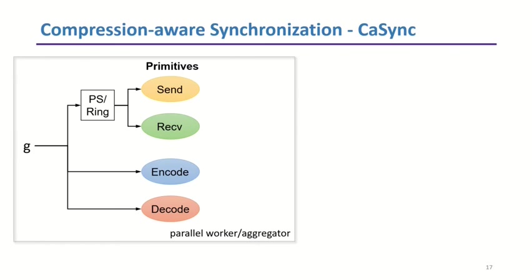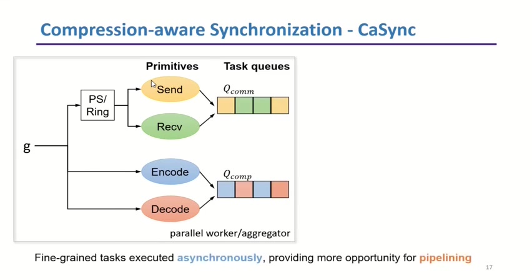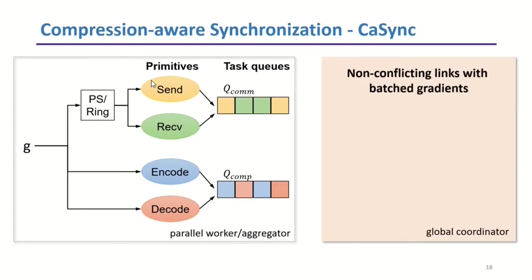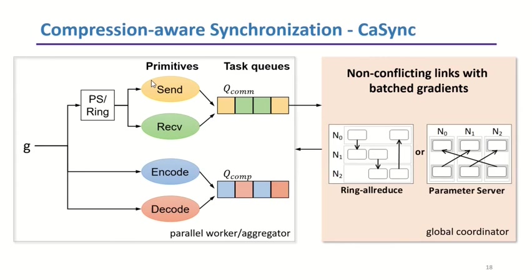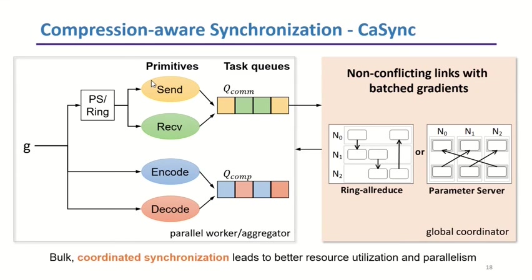To address Challenge 1, hiding compression costs along synchronization, we split the gradient synchronization path into multiple fine-grained primitives. Encode and decode are compression-related operators; send and receive are communication-related operators. Computation and communication operators are scheduled and managed by different task queues and then executed asynchronously, providing more opportunity for pipelining. Second, we propose a bulk synchronization approach, which relies on a global coordinator to collect gradient metadata from workers or aggregators, batch gradients per network link to better utilize link bandwidth, and choose non-conflicting links for data transmission to simultaneously use the upstream and downstream bandwidth of each node. This bulk synchronization is general to different synchronization architectures, such as AllReduce or Parameter Server.